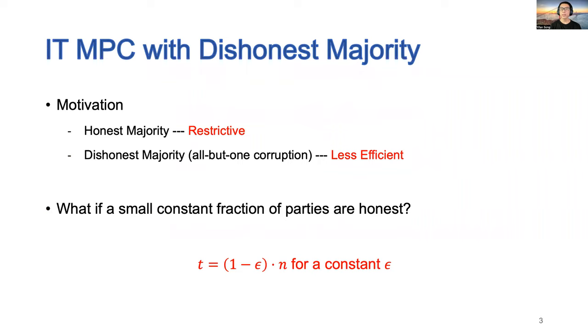When people talk about dishonest majority, they usually assume that all but one party are corrupted. Our motivation is to study an intermediate case between honest majority and all but one corruption—say a small constant fraction of parties are honest. This can be motivated by the fact that protocols that are secure against all but one corruption are less efficient than protocols in the honest majority setting.